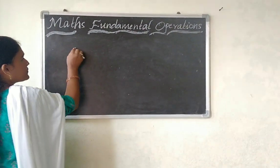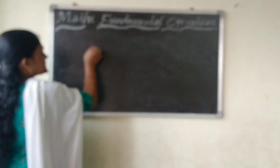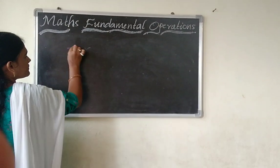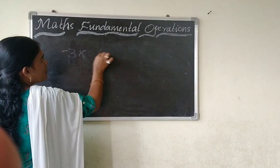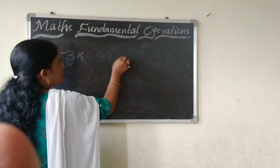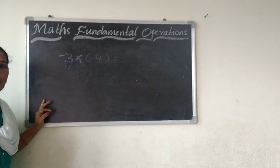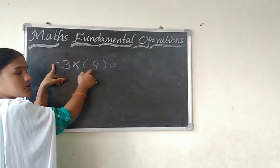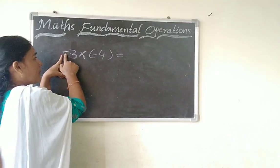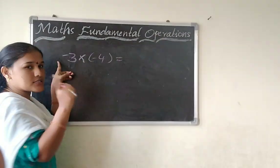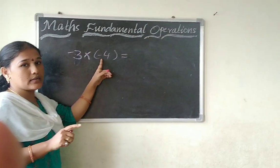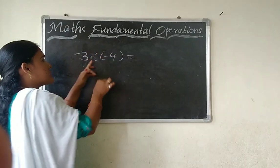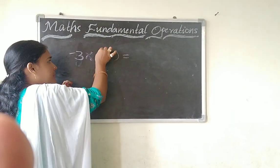Suppose the example here: minus 3 into minus 3 into minus 4 is equal to. Okay, minus 3 into minus 4 is equal to. Here minus into minus — first you can write minus into minus. Minus 2 is equal to minus. Multiplication, minus 2 is equal to minus.